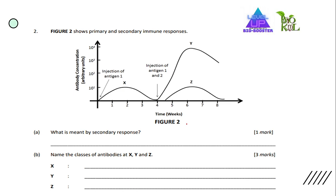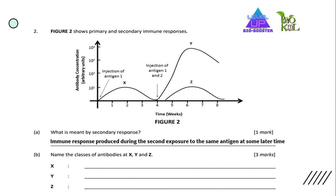Moving to the next question. Figure 2 shows primary and secondary immune response. What is meant by secondary response? Secondary response means the immune response produced during the second exposure to the same antigen at some later time.